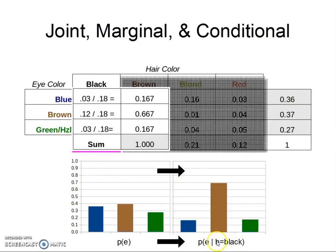Given that we observed that the hair color is black, now the probability of eye color changes. So to visualize this, we can see that blue dropped to 16.7%, and so did green eyes, but the probability of brown eyes jumped up quite a bit to 66.7%.